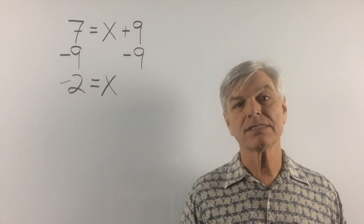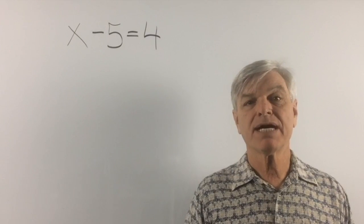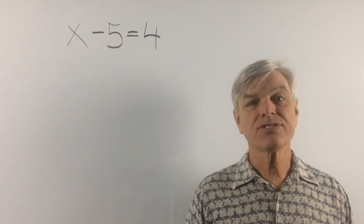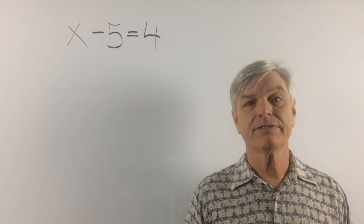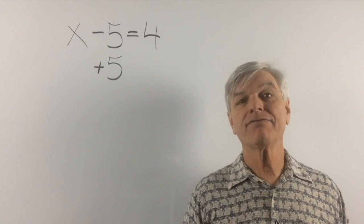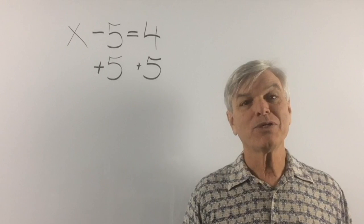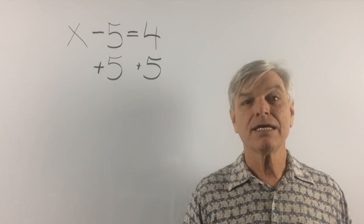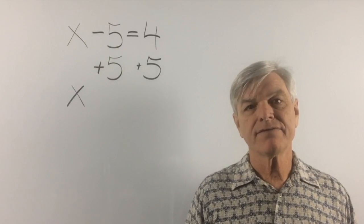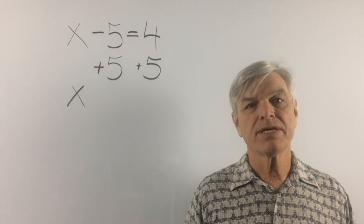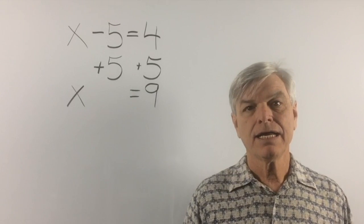Let's see what happens when we have subtraction. x minus 5 equals 4. We're trying to get x alone. To get rid of negative 5, we add positive 5. Whatever we do to the left-hand side, we do to the right-hand side. Negative 5 and positive 5 is 0, so we don't bring anything down there. Bring the equal sign down. 4 plus 5 is 9, and x equals 9.